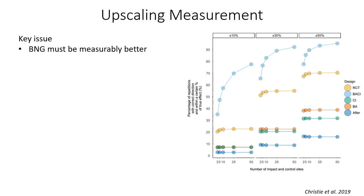There's a key point in the legislation: we must be able to measure that the biodiversity net gain has occurred. To show that in a robust and confident way requires a design that acknowledges there can be other sources of variation, and during global change and climate change this becomes even more important. The diagram on the right illustrates the number of sites — particularly control sites — that you might need in order to show that your restoration has been successful, with different design types shown in different colours.